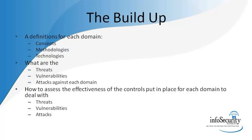That is when the last part of each domain comes in. We talk about the effectiveness of controls: what controls are in place in your environment and are they effective? Are they able to reduce the threats, eliminate the threats, or close the vulnerabilities that could be used by a threat agent to attack your system? This helps you understand the importance of the confidentiality, integrity, and availability concept and how it relates to each domain.